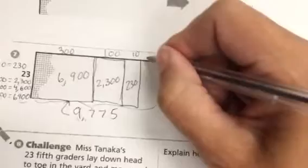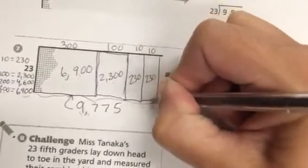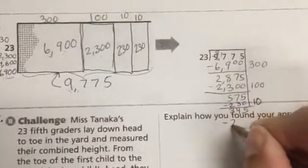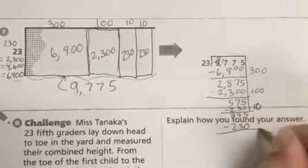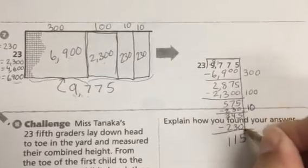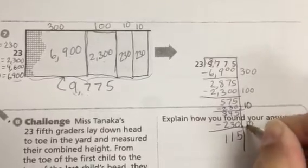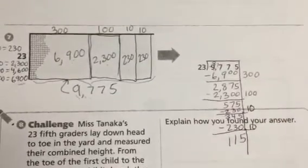I'm going to do another group of 10 times 23, which is 230. I'm going to subtract 230 again. That was another group of 10. So I still have 115 blocks.